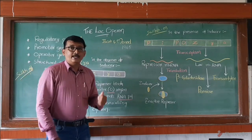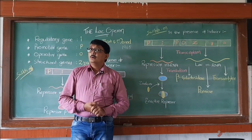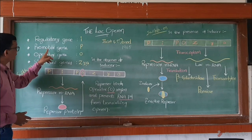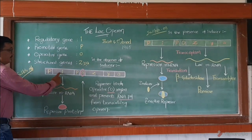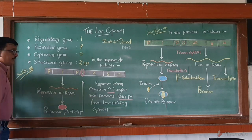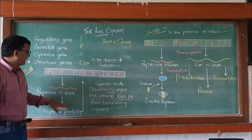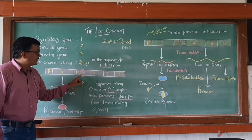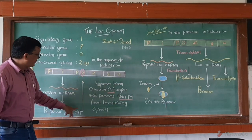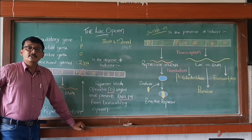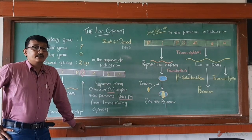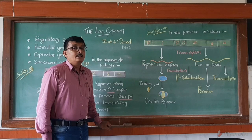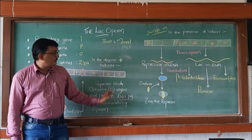Imagine a medium in which bacteria is growing, and in that medium there is no lactose. At that moment, repressor protein is produced. The regulatory gene (I) undergoes transcription and forms repressor mRNA, which then forms repressor protein by translation. This repressor protein binds to the operator region, blocking the passage of RNA polymerase enzyme.